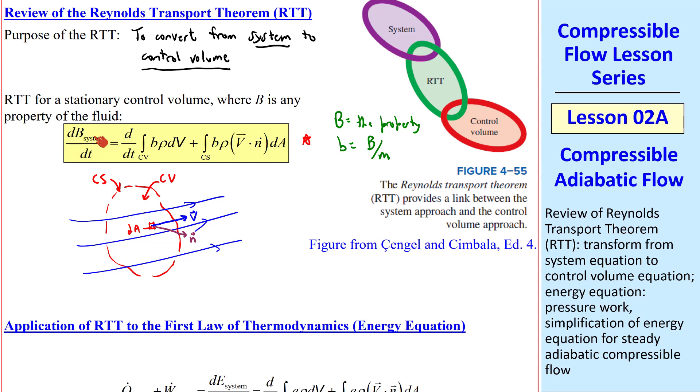I note that capital B is generally the property, and lowercase b is the property per unit mass, which we often call the specific property. The left-hand side of this equation is the system side, and the right-hand side is the control volume side. Conservation laws are typically written for a system, but the RTT, as illustrated here, allows us to describe the conservation equation in terms of a control volume.